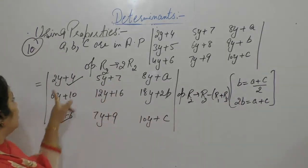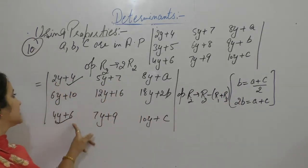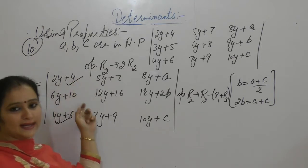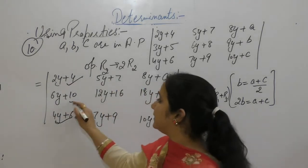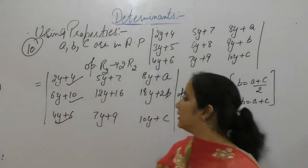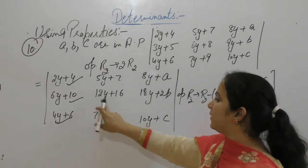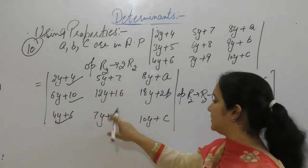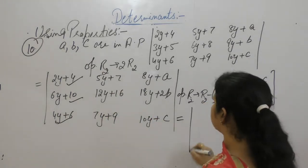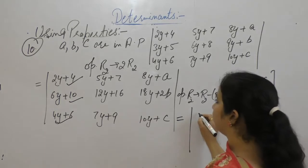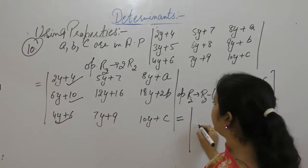4 plus 2 is 6. 5. 6 plus 4 is 10 — same as this element. 5 plus 7 is 12. 9 plus 7 is 16. So it becomes the new R2.